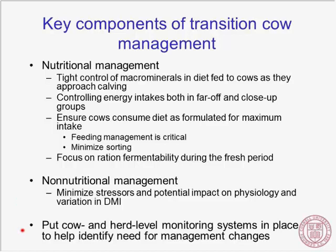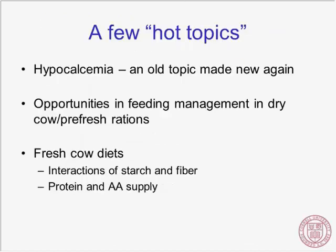We also have increasing opportunities to put into place systems for cow-level and herd-level monitoring using things like blood ketones. Some farms now have rumination tags or rumination monitors to track rumination activity in cows pre- and post-calving. Today we're going to hit a few hot topics and not try to cover anything comprehensively, but to focus on things that are getting attention going forward. The first one we'll talk about is hypocalcemia — an old topic that's been made new again.